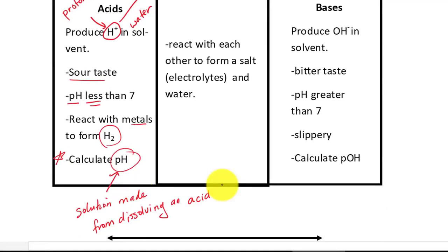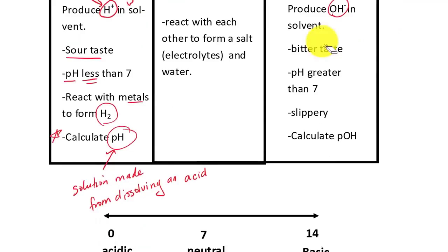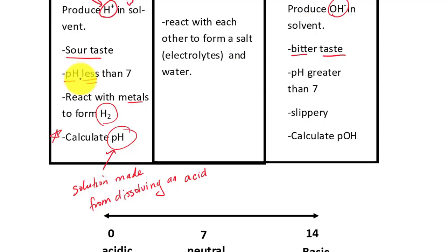Now let's go over to bases. Bases produce an OH-, and the name of the ion for OH- is hydroxide. Another characteristic of a base is that it has a bitter taste — think of soap; if you've ever tasted soap, it tastes very bitter. On a pH scale, acid and base are kind of opposite to each other. If acid is less than seven, the pH for a base would be greater than seven.